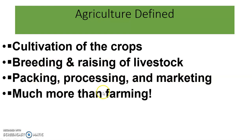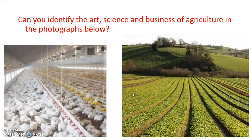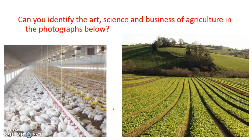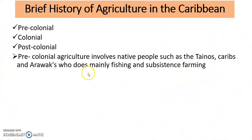So it's much more than just farming. Can you identify the art, the science, and also the business of agriculture in the photograph below? Look how neatly these rows are drawn — that's the art. The rearing of these chickens, and the business and the science in getting all of these waterers and feeders set up. So it's the art, science, and business of farming.